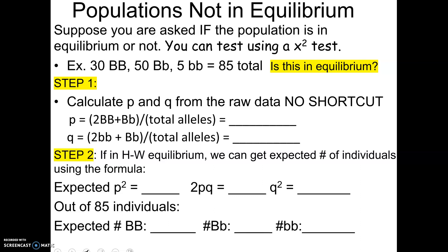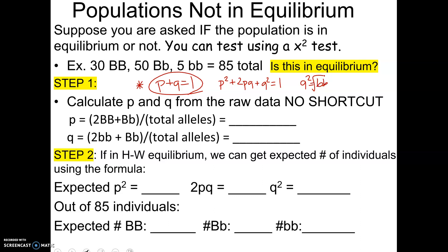We've talked about how you can get P and Q. P plus Q is equal to 1 — this is always going to be true. P is the frequency of the dominant allele, and Q is the frequency of the recessive allele. This is on the formula sheet. The other formula we discussed is that if a population is in Hardy-Weinberg equilibrium, then P squared plus 2PQ plus Q squared equals 1. We could use a shortcut: since Q squared is the frequency of homozygous recessive individuals, we take the square root to get Q, and from there get P.